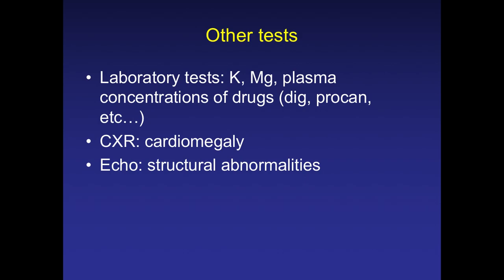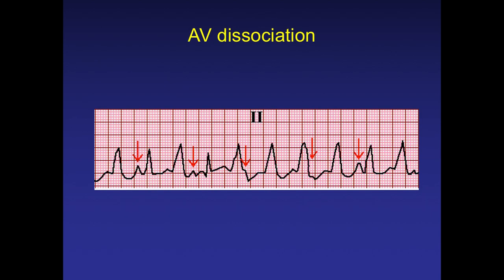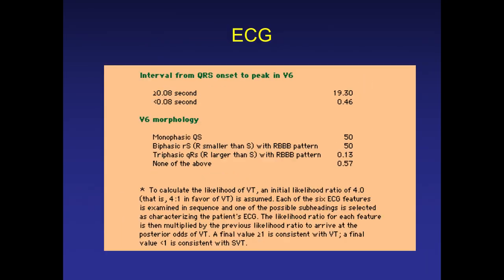Other investigations include blood tests, chest X-ray, and echocardiography to rule out structural heart disease. When you encounter a wide complex tachycardia, always look for AV dissociation — whether the atrial and ventricular activities are regular with each other — as well as fusion beats, capture beats, and QRS width. On a baseline ECG during sinus rhythm, look for evidence of ischemia, acute MI, old MI, Brugada pattern, or LVH.